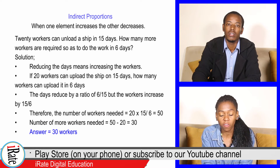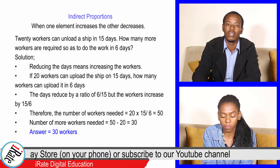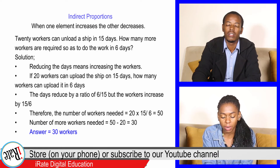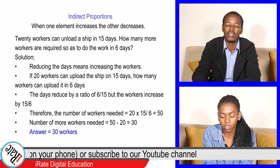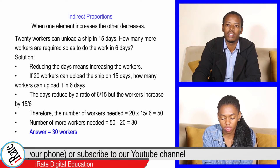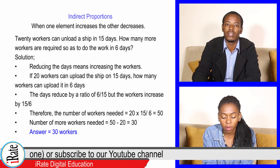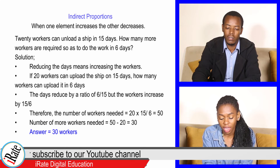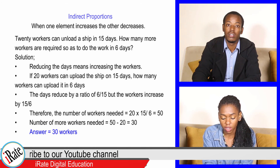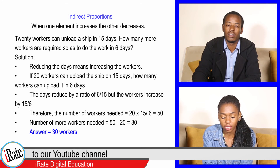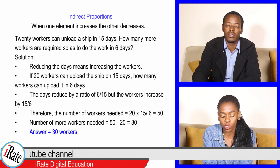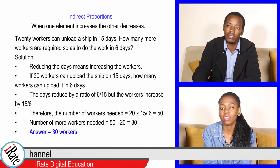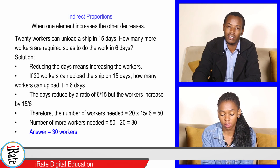The days reduced by a ratio of 16 is to 15, but the workers increased by 15 is to 6. Therefore, the number of workers needed is 20 times 15 over 6. The answer is 50. The number of more workers needed is equal to 50 minus 20, and the answer is 30 more workers.